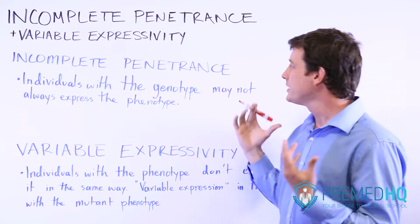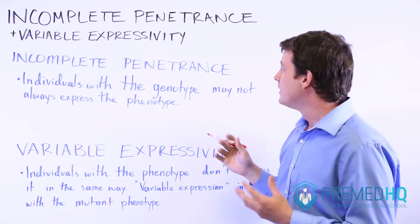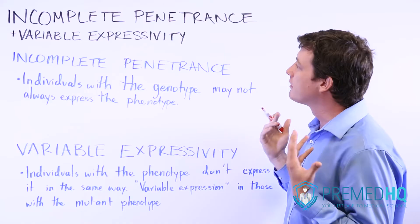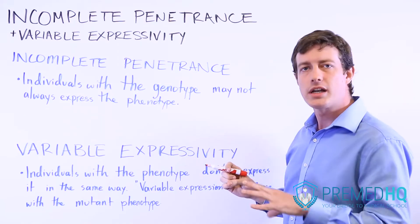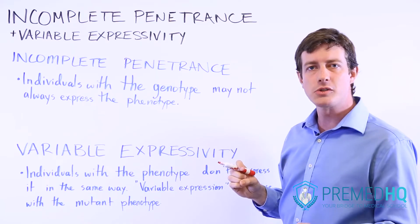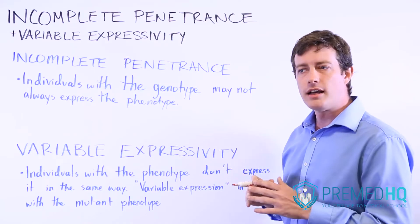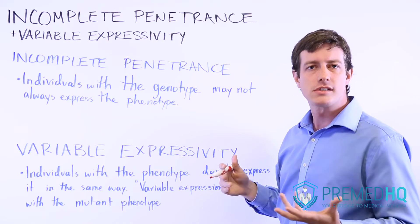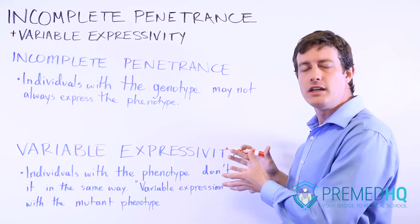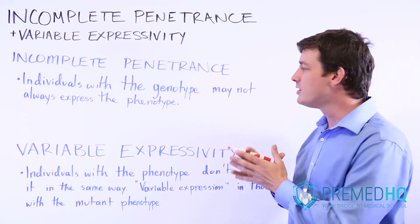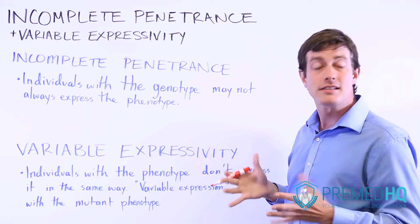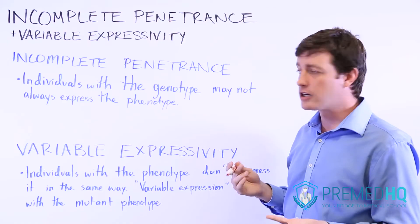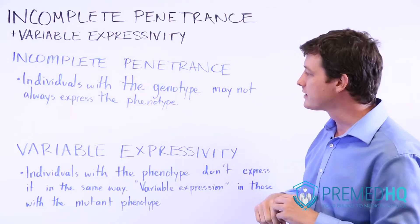Incomplete penetrance essentially refers to when someone has the genotype that results in a phenotype but they don't express that phenotype — and that is something that occurs quite often.